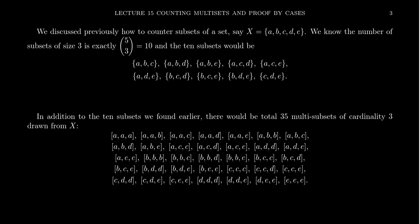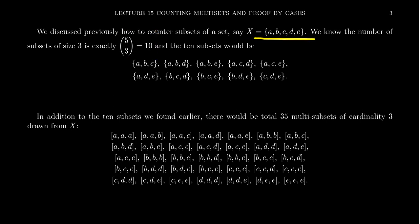From the perspective of combinatorics, we're introducing multi-sets with a very important goal: we want to count how many multi-sets we can get. Let's imagine we have the set X = {a, b, c, d, e}, containing five elements. We've already considered the problem of how many subsets of size 3 we can form. Using binomial coefficients, the number of subsets of size 3 from a set of size 5 is 5 choose 3, which equals 10.